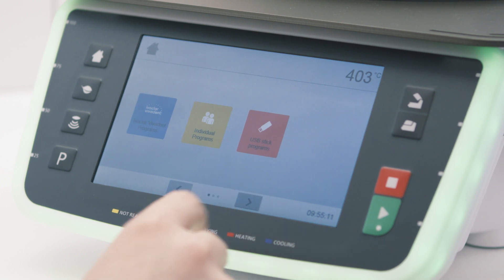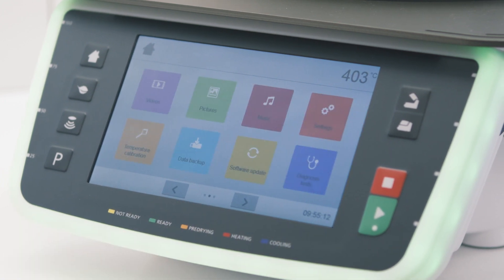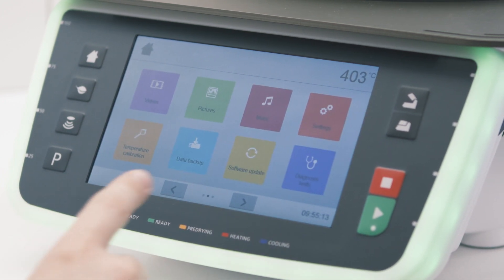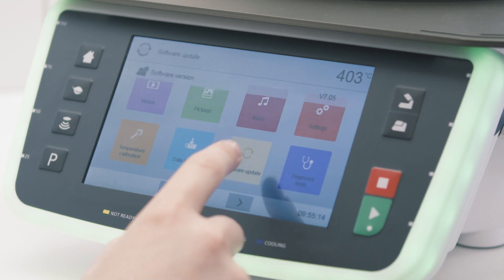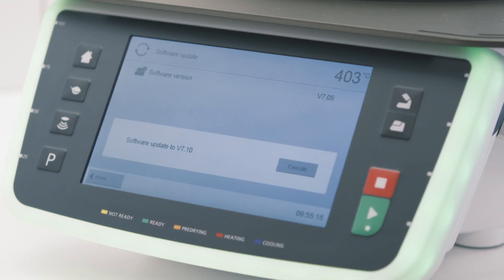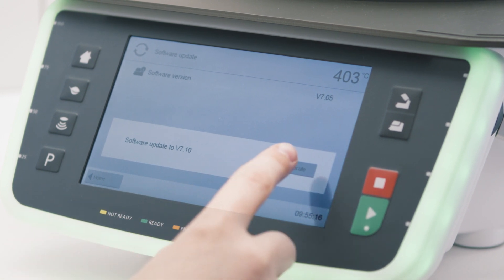Select the software update menu on the home screen. If an update file is available on the USB flash drive, it will now be displayed on the screen. Press the execute button to start the update.